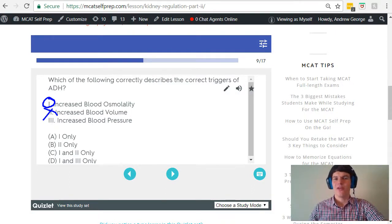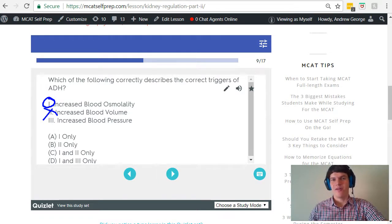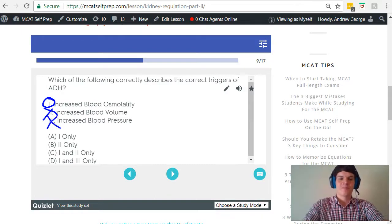What about blood pressure? Well, think about the relationship between volume and pressure. If there's a high volume of blood, there's going to be a high pressure. So those two can both be eliminated together. Thus, answer choice A is the correct answer here.